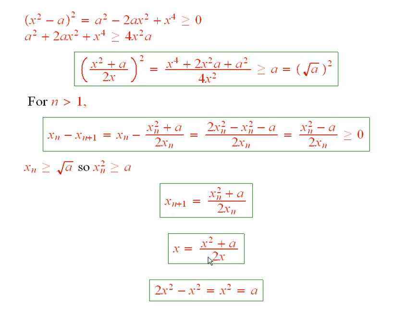And then you see, if I multiply both sides by 2x and subtract x squared from both sides, I find that x squared is equal to a, and so the thing it converges to is the square root of a.